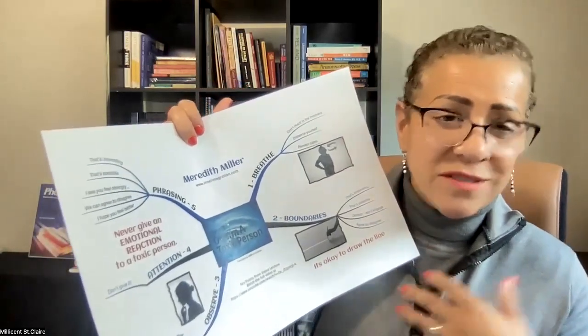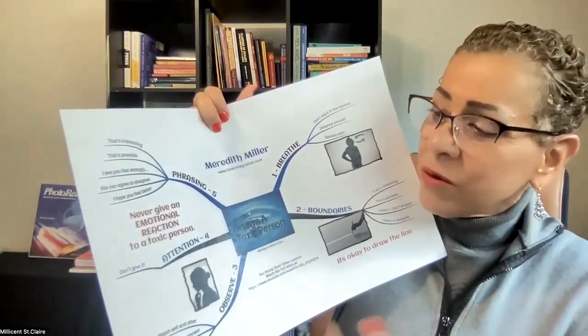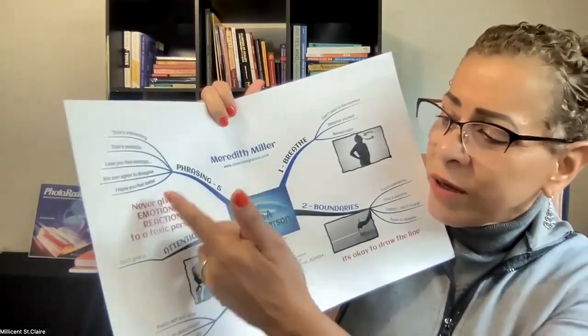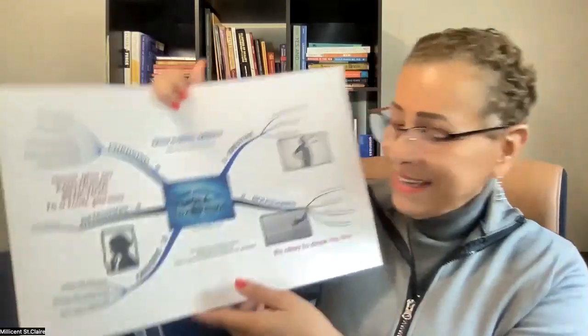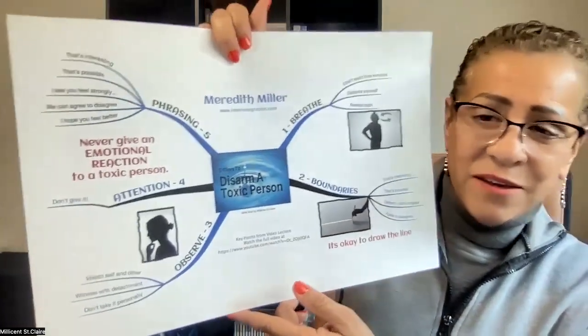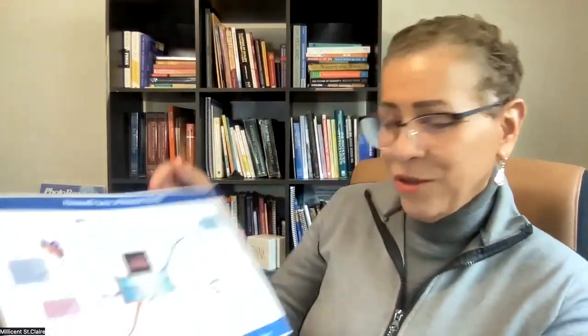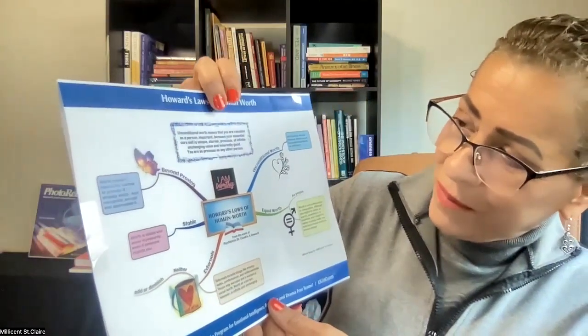Number five: phrasing. She gives suggestions on things you could say — 'Well, that's interesting,' that way you don't discount the other person because they've got their point of view. You could say 'That's possible,' or 'I see you feel strongly about that,' or 'We can agree to disagree.' You could close with something as simple as, 'I hope you get to feeling better — I'm working on my stuff.' Take ownership and leave it alone. That's an example of taking notes on a talk and using it in my coaching practice.